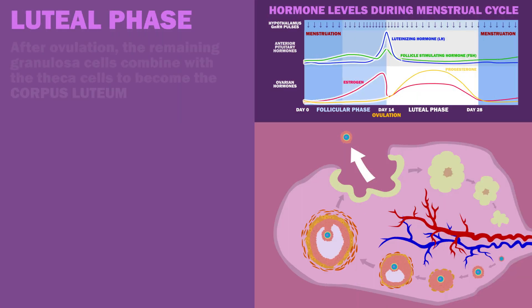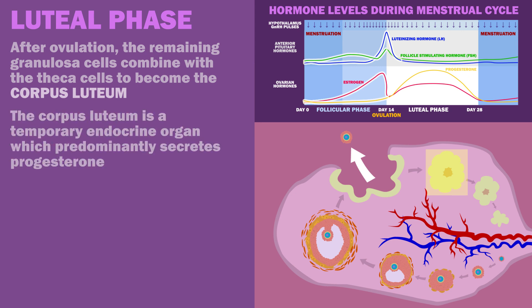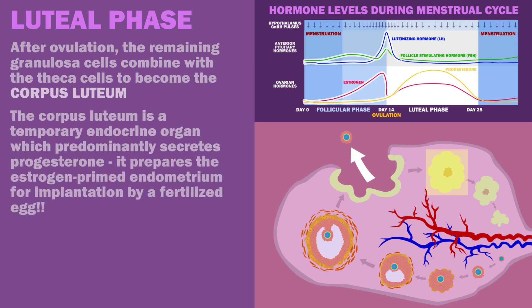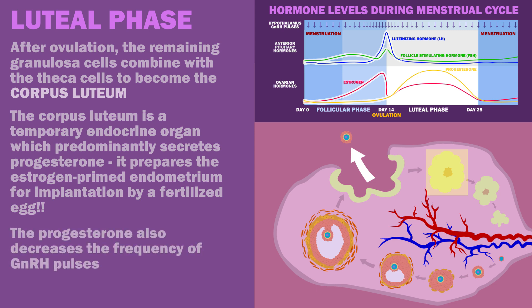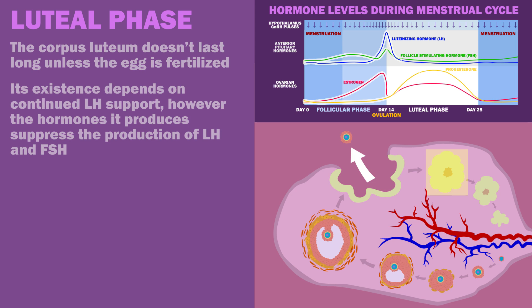After ovulation, the remaining granulosa cells combine with the theca cells and surrounding stroma in the ovary to become the corpus luteum. The corpus luteum is a temporary endocrine organ which predominantly secretes progesterone. It prepares the estrogen-primed endometrium for implantation by a fertilized egg. The progesterone also decreases the frequency of GnRH pulses. The corpus luteum doesn't last long unless the egg is fertilized — its existence depends on continued LH support. However, the hormones it produces suppress the production of LH and FSH.